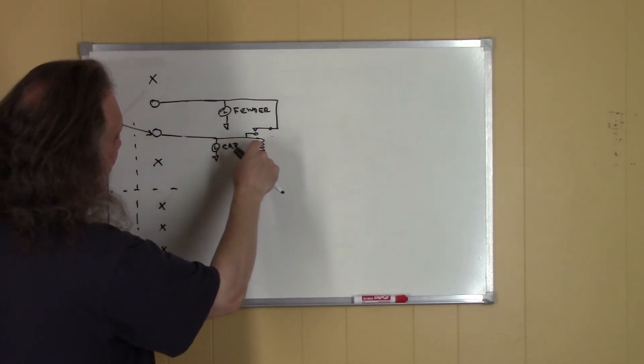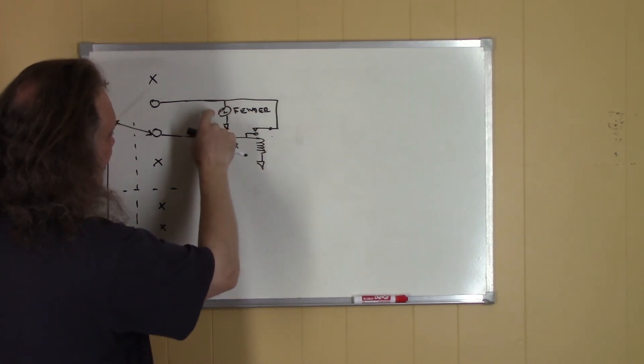When we flip the switch over to our cab lights, power comes through here, turns on the cab lights, energizes this relay which ties this line and this line together, and it turns on the fender lights and the cab lights at the same time. So that works out.